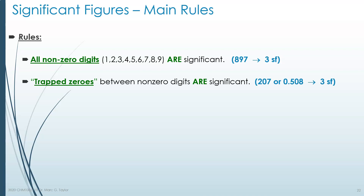Trapped zeros — zeros that are stuck between non-zero numbers, like 207 or .508 — those zeros in the middle are always counted as significant. Any zero between non-zero numbers is counted. The reason is, within a number there is a first significant digit and a last, and everything in between is significant. We don't have two separate groups of significant digits within a single number. It's always one string, and in each of these examples, these are three sig figs.